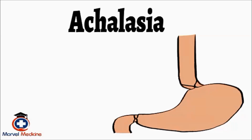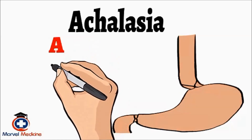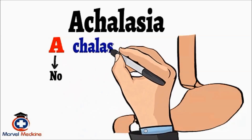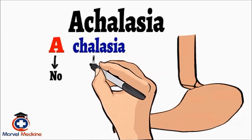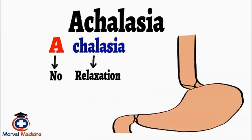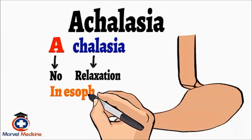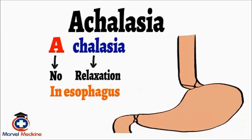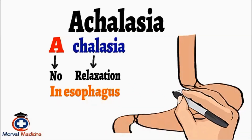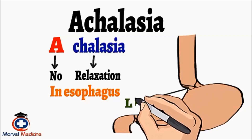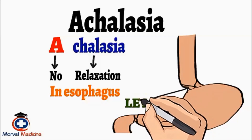The word achalasia is composed of two parts: 'a,' which means no, and 'chalasia,' which means relaxation. So achalasia means loss of relaxation in a part of the esophagus. Achalasia occurs at the very lower end of the esophagus, which is called the lower esophageal sphincter.